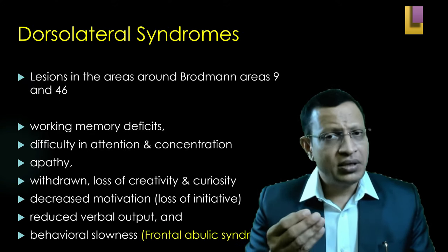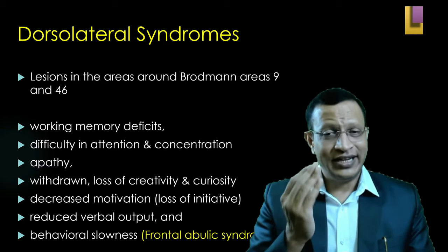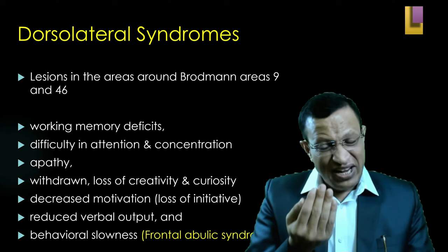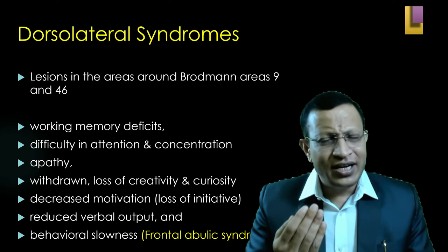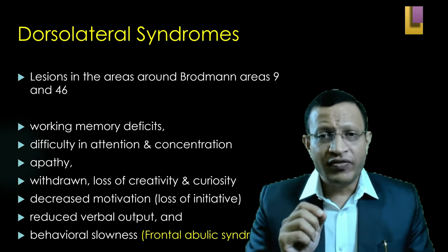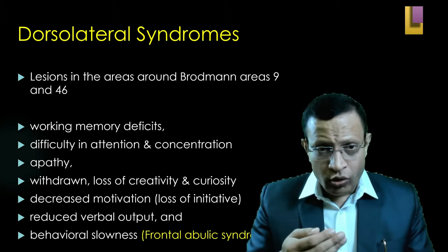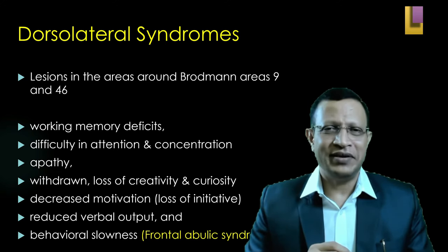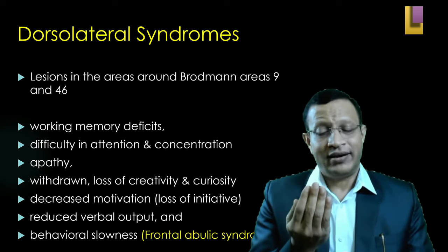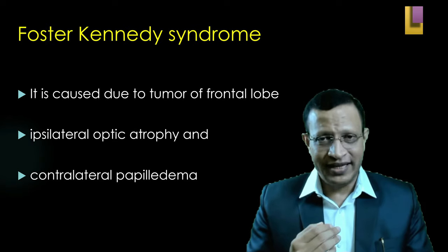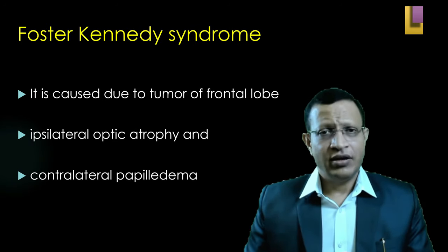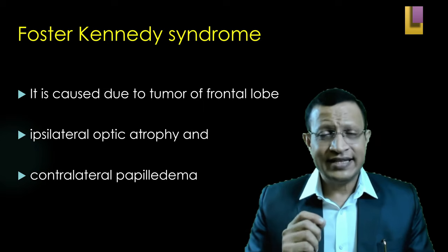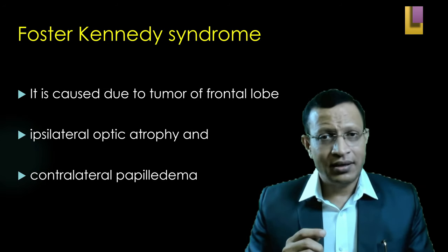Opposite to that is the dorsolateral convex syndrome. Here the patient is withdrawn, shows apathy, difficulty in concentration, working memory deficit, loss of creativity and curiosity, decreased motivation, loss of initiative, reduced verbal output, and behavioral slowness — this is commonly called the frontal abulic syndrome. One more important syndrome is Foster-Kennedy syndrome, caused by a tumor of the frontal lobe, presenting with ipsilateral optic atrophy and contralateral papilledema.